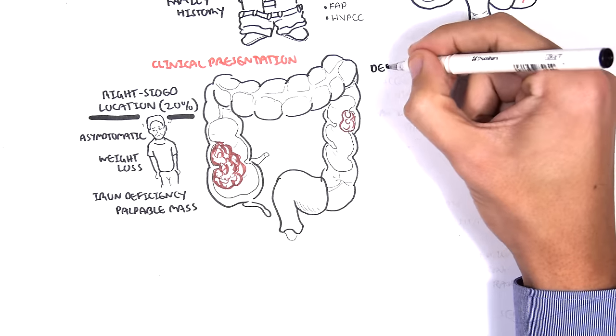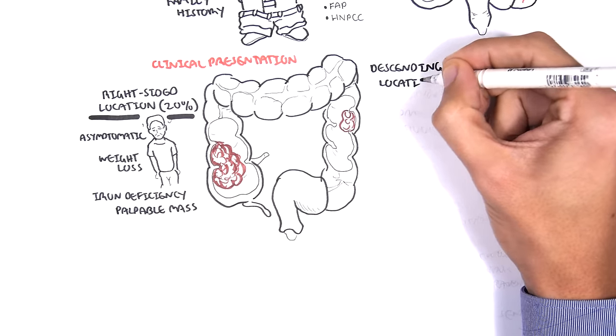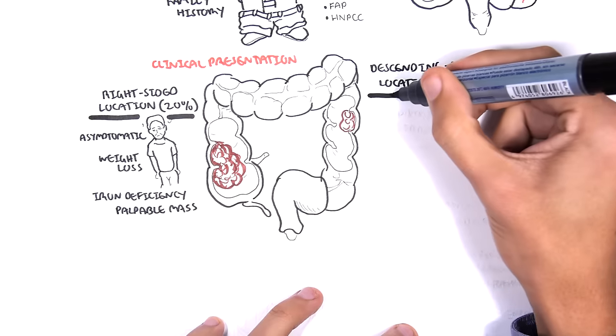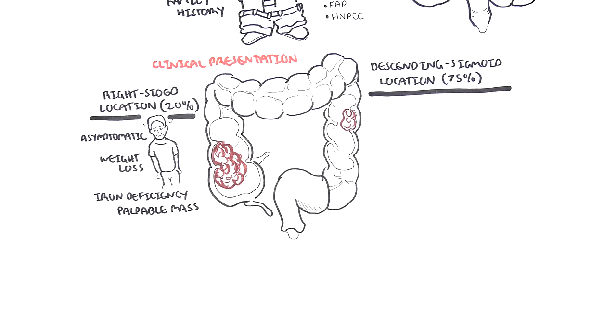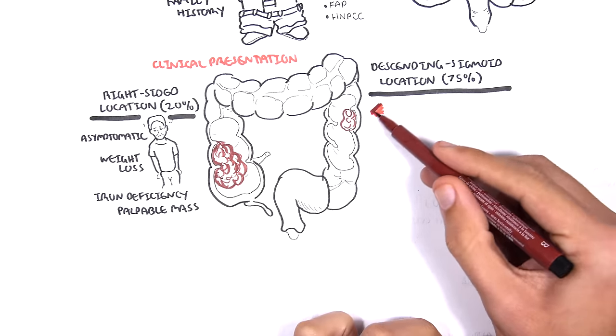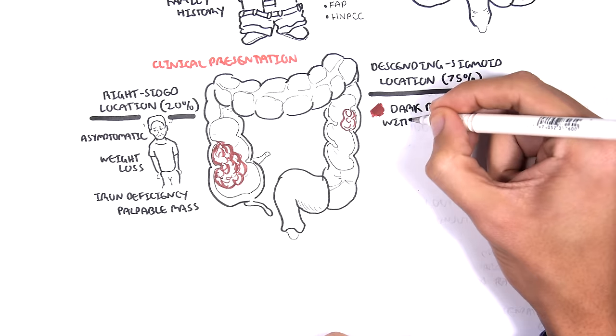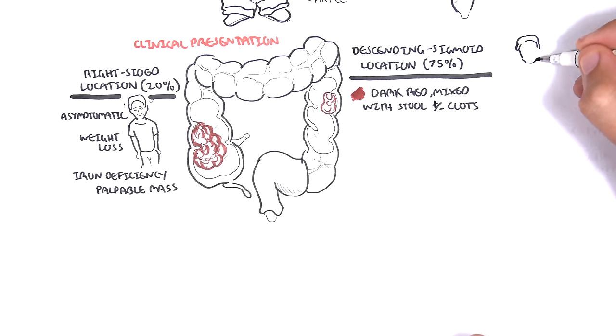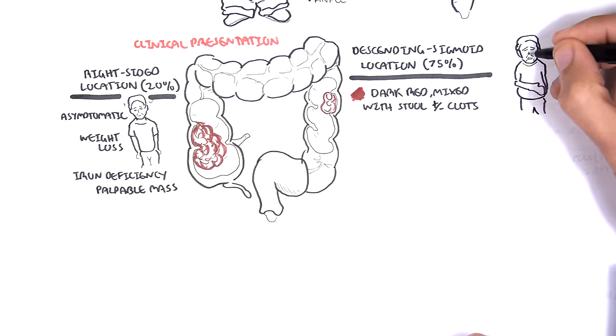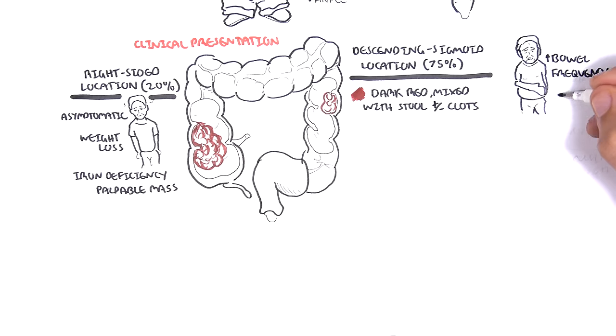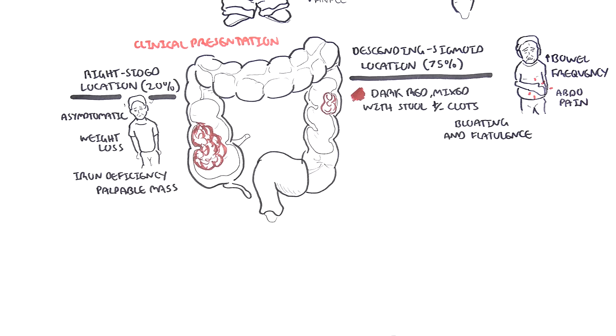Tumors occurring in the descending sigmoid area account for the majority of colon cancer, 75% of cases. Patients can complain of dark red blood mixed in with stools, plus minus clots. There can be increased bowel frequency, abdominal pain, bloating, flatulence, and mucus present.